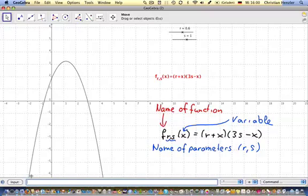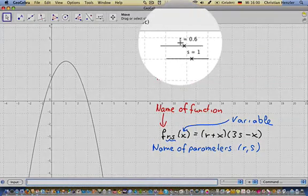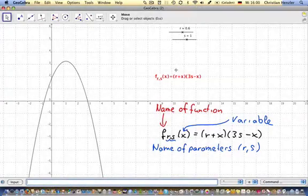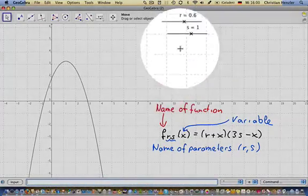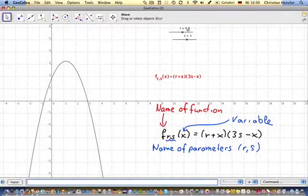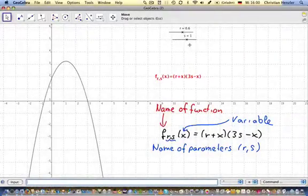we will get our graph of the family of functions here. But this graph just shows me one specific graph of functions, and that specific one where r has the value of 0.6, and where s has the value of 1.